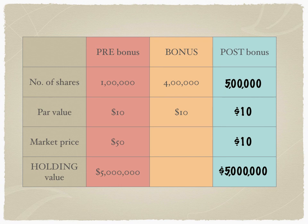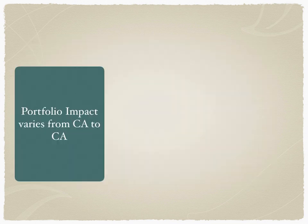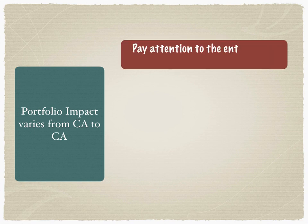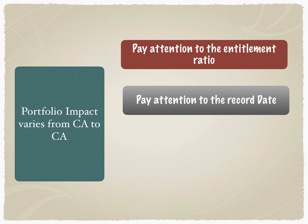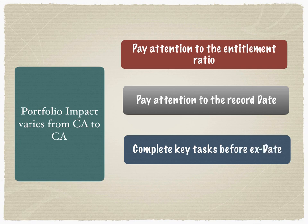If you're an executive working in corporate actions, remember the portfolio impact varies from CA to CA. Three things to remember: first, pay attention to the entitlement ratio and how it is interpreted. Second, pay attention to the most important date in corporate actions — the record date — because you must be an investor on the record date to receive that entitlement. Third, complete all key tasks before the ex-date.